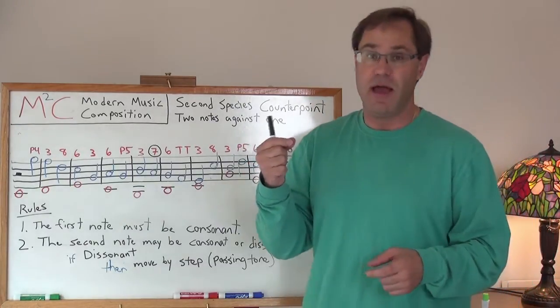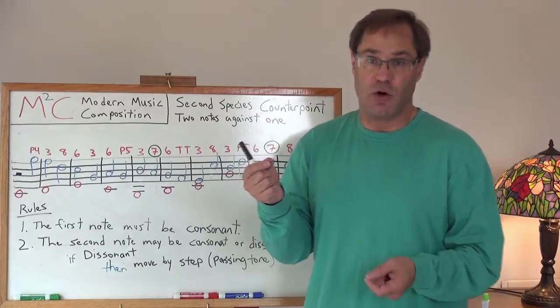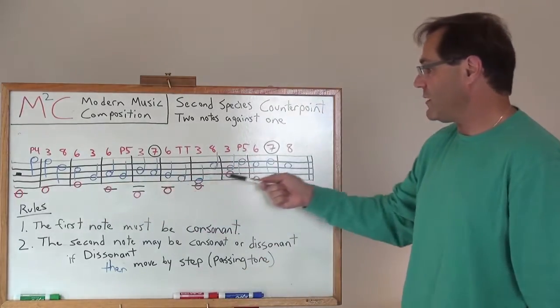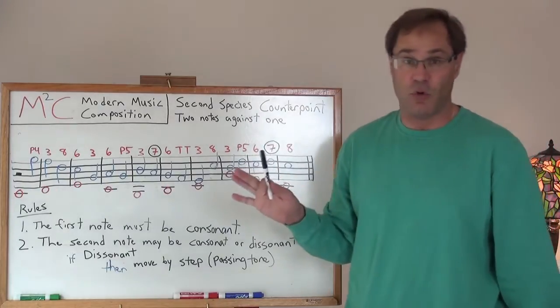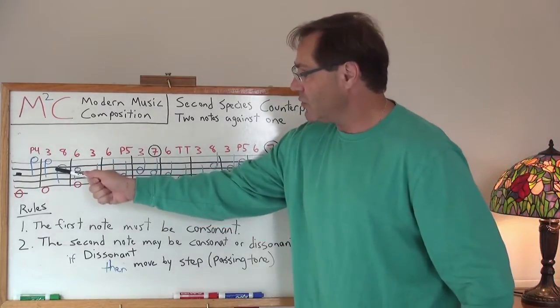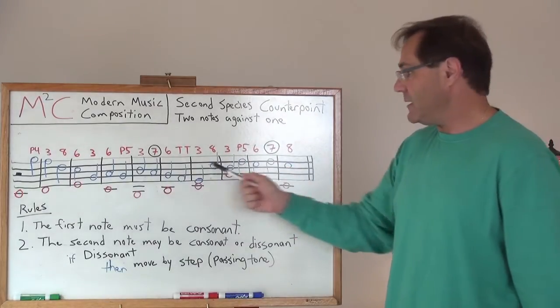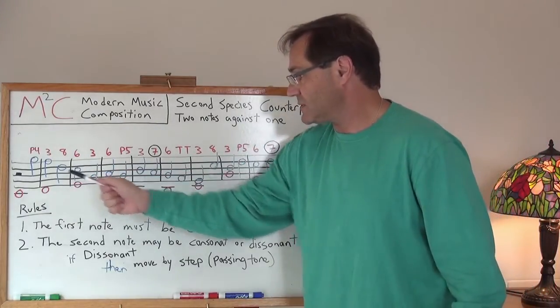So in this case, we've got two half notes against a whole note. So in our Cantus firmus, I've written out here in red the whole notes. And then in blue is our second species counterpoint in terms of the two notes against the one note.